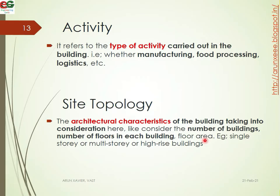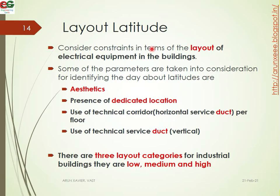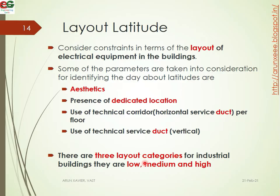The architectural characteristics make up the site topology. The next factor is Layout Latitude — the structure of the building and constraints in terms of the layout of the electrical equipment. Some parameters taken into consideration include the presence of dedicated locations, use of technical corridors, horizontal and vertical routing. There are mainly three layout categories: low, medium, and high.